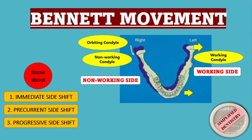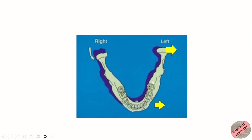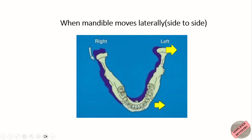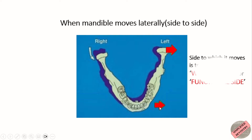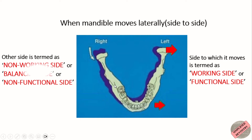Before moving on to Bennett Movement, first let's have the idea about working and non-working condyle, and let's see what is working side and non-working side. When the mandible moves laterally, i.e. side to side, the side to which it moves is termed as the working side or functional side, whereas the other side is termed as the non-working side or balancing side or non-functional side.